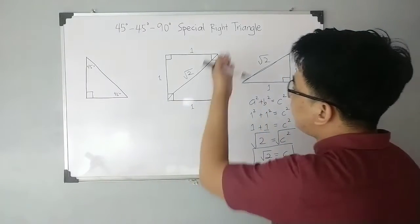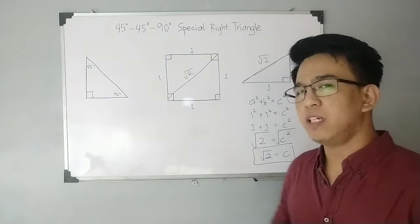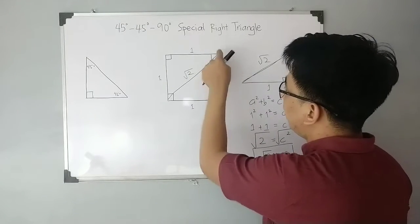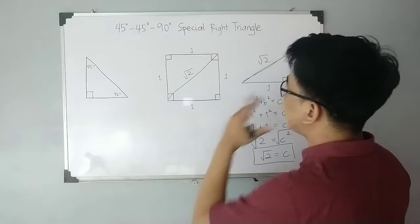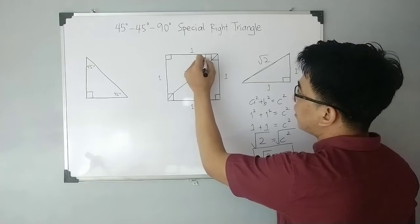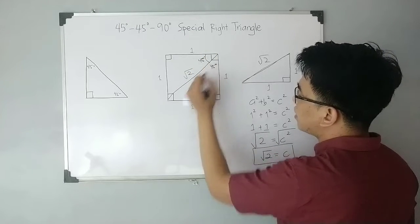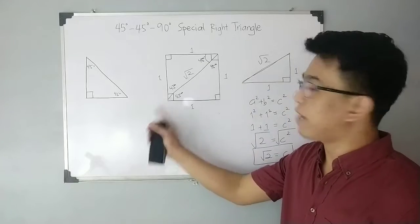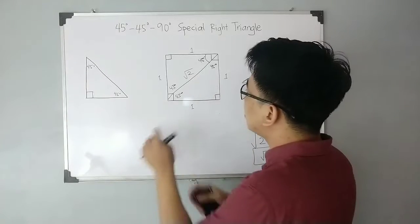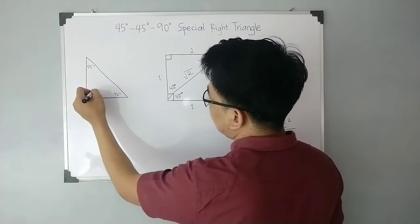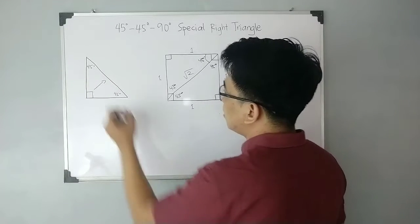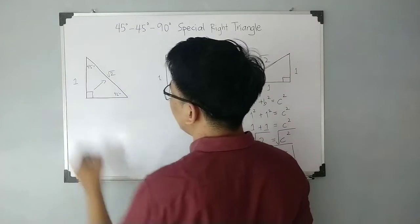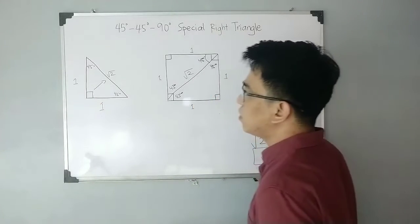Now for the angles — given this diagonal, we use the property of a square that the diagonals bisect the opposite angles. Since each corner is 90° and it is bisected by the diagonal, each resulting angle measures 45°. So we have angles of 45°, 45°, and 90°. The hypotenuse, which is the diagonal, measures √2, while each leg measures 1.